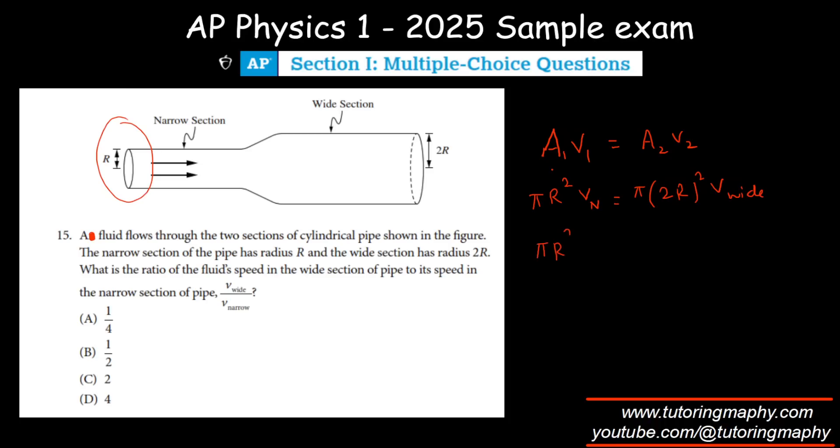So pi r square v narrow will be equal to pi times 4r square times v wide. So pi r square and pi r square is gone.